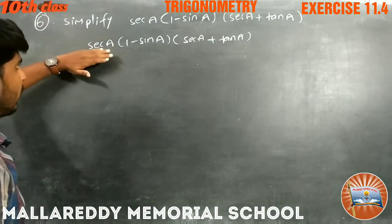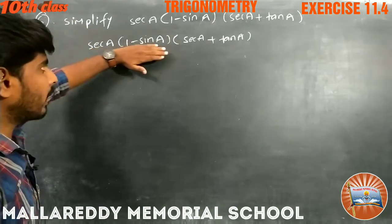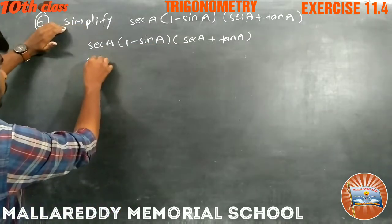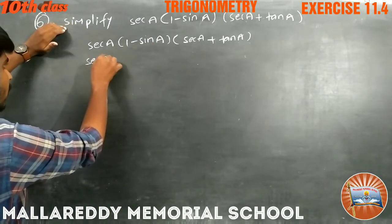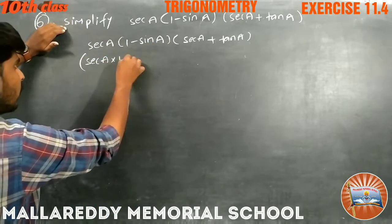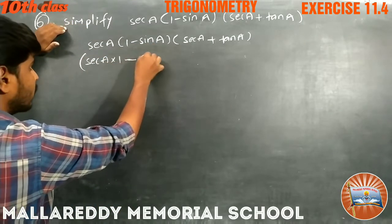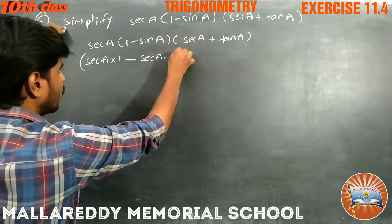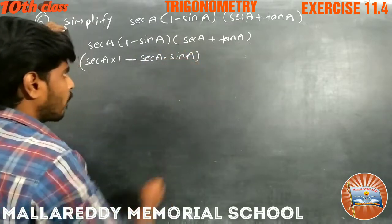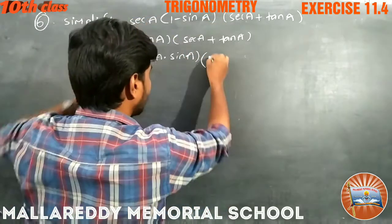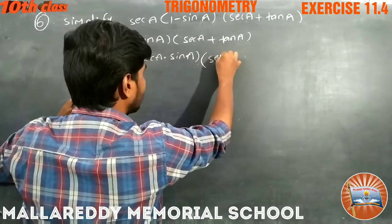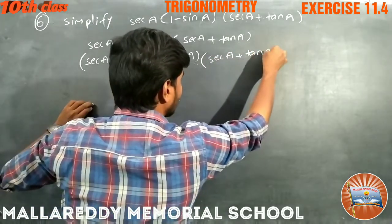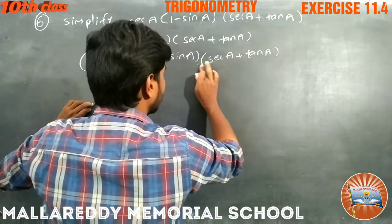Now multiply this secant a into 1 minus sin a. So what becomes: secant a into 1 minus secant a into sin a, and this one I am writing here — secant a plus tan a as it is.